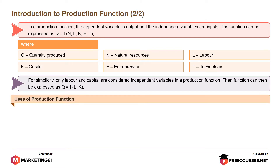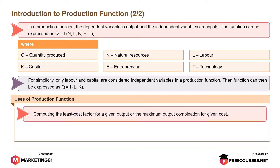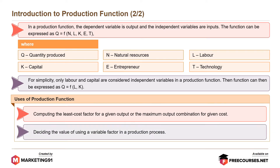Uses of production function: for computing the least cost factor for a given output or the maximum output combination for a given cost, and also for deciding the value of using a variable factor in a production process.